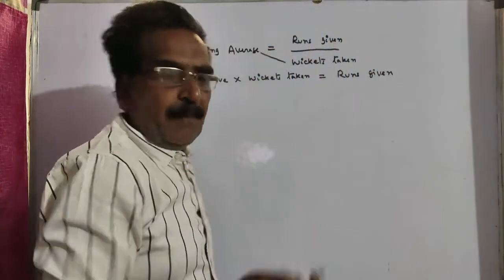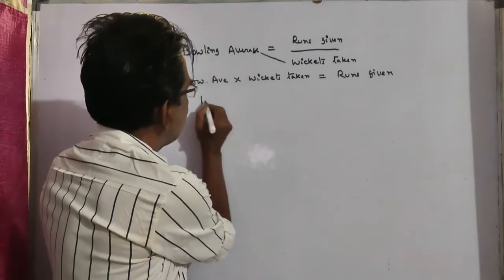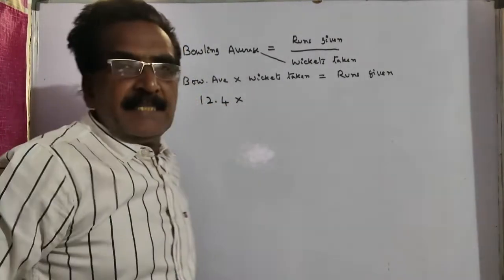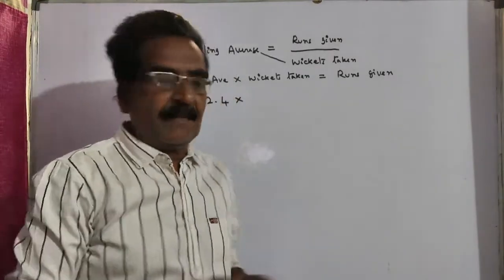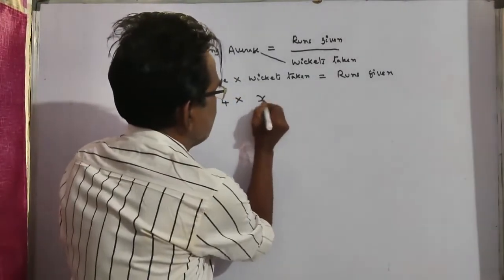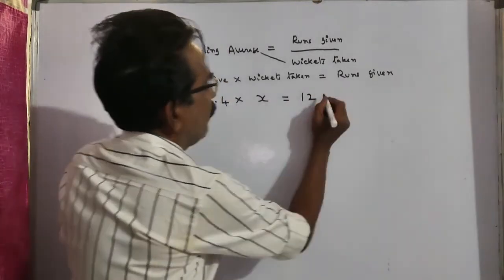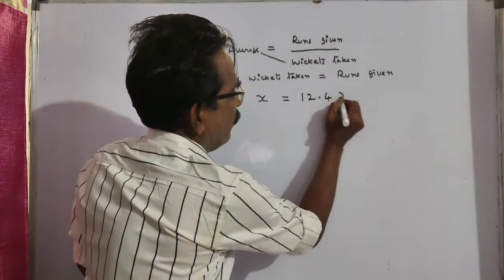So, now in the present problem, his bowling average is 12.4 into, let us say the number of wickets taken by him, say x. Then, the total number of runs is 12.4 into x. 12.4 x.